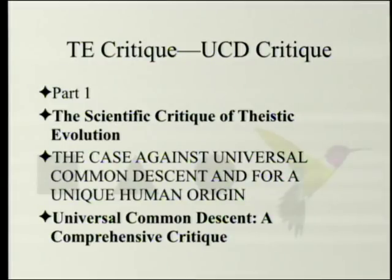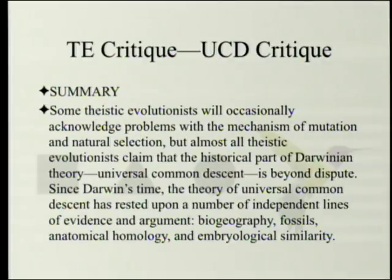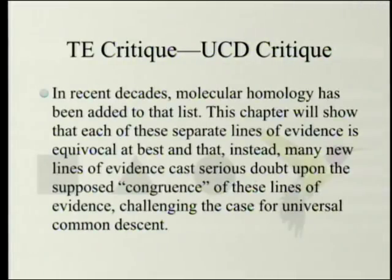Although, as we will see in the chapter itself, it's not really comprehensive — that would require a whole book on its own. The summary states: some theistic evolutionists will occasionally acknowledge problems with the mechanism of mutation and natural selection, but almost all theistic evolutionists claim that universal common descent is beyond dispute. Since Darwin's time, the theory has rested on biogeography, fossils, anatomical homology, and embryological similarity. In recent decades, molecular homology has been added. This chapter will show that each of these lines of evidence is equivocal at best, and many new lines of evidence cast serious doubt upon them.